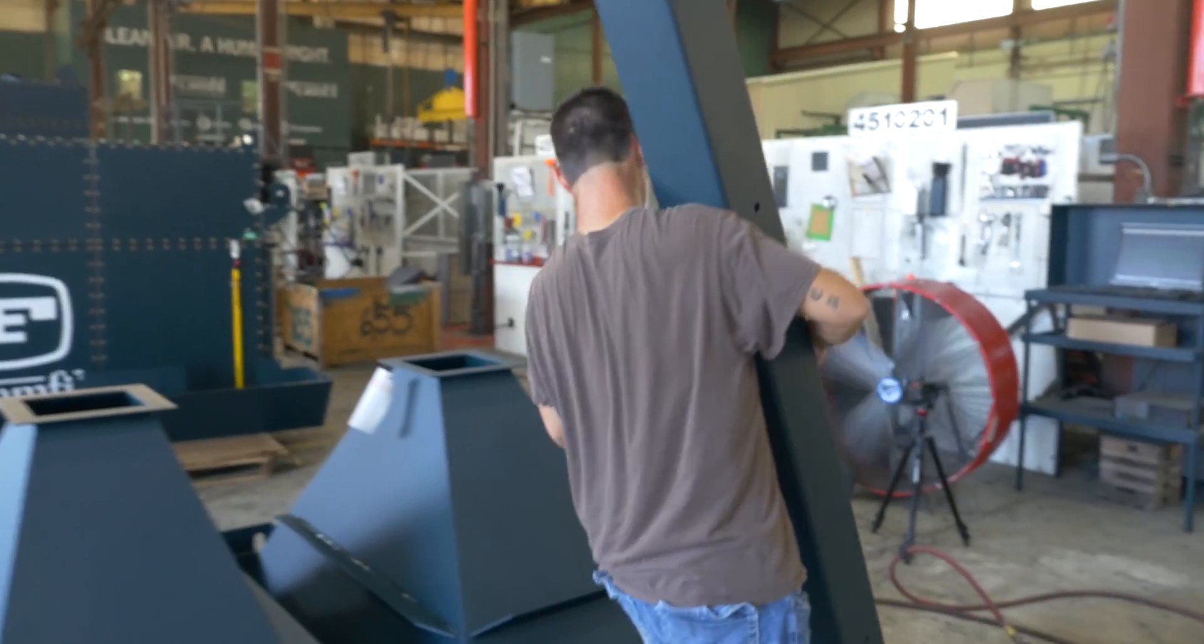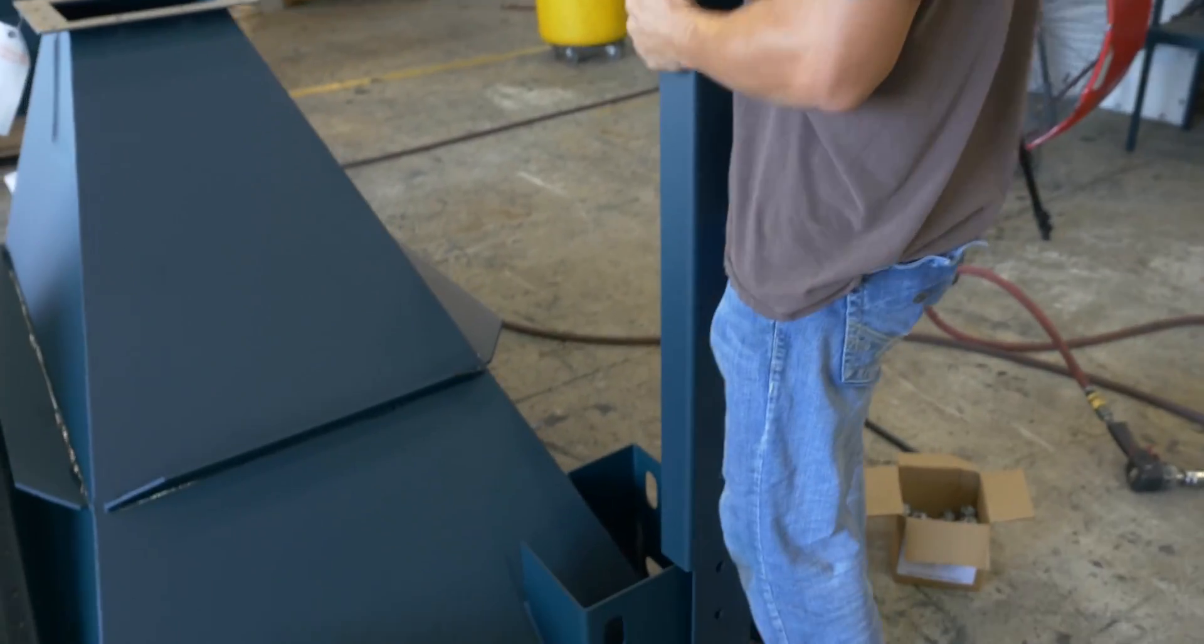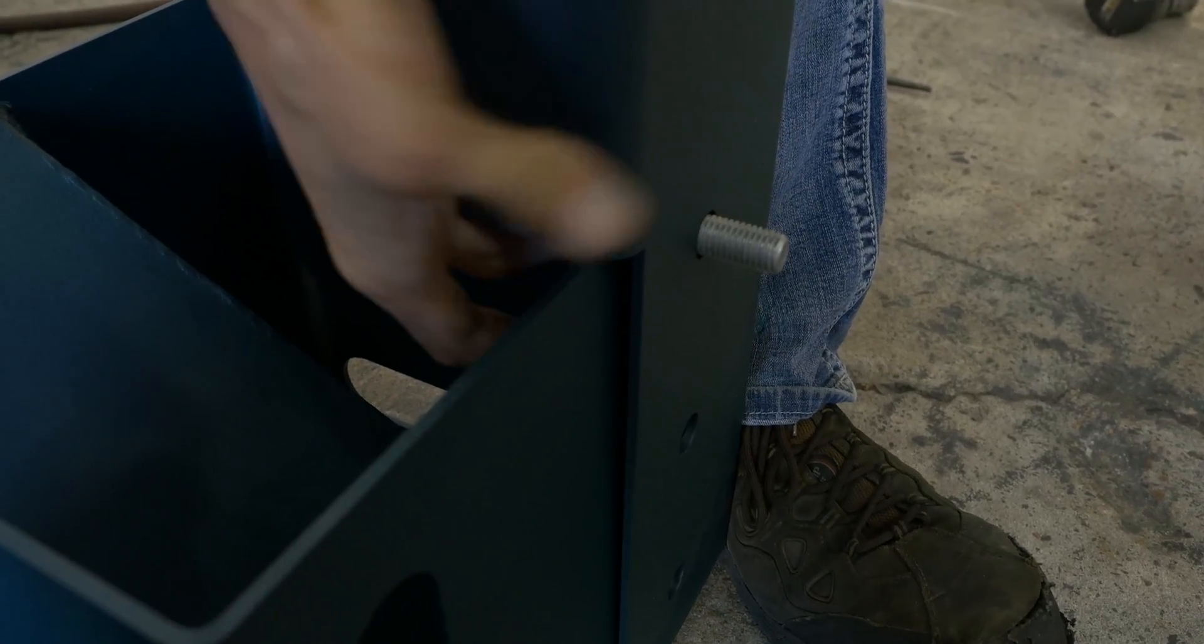Locate the support legs and bolt them to the corner support brackets. Place each bolt in and hand tighten.